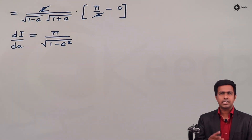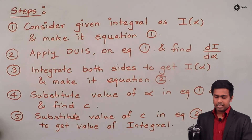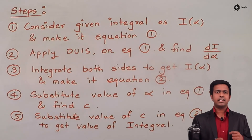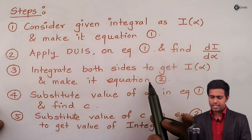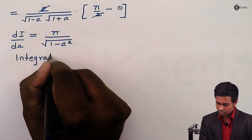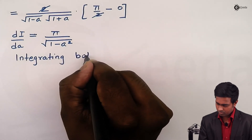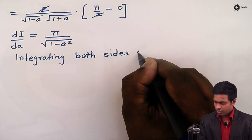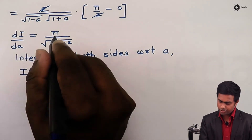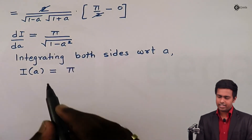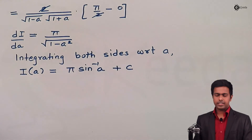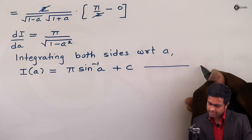Now we move to step number three, which says to integrate both sides to get the value of I(a), and make it equation number two. Integrating both sides with respect to a, we get I(a) = π·sin⁻¹(a) + c, where c is the constant of integration. This is equation number two.